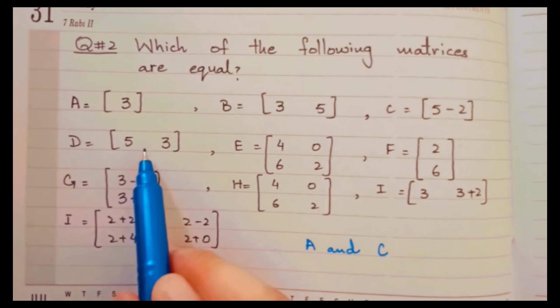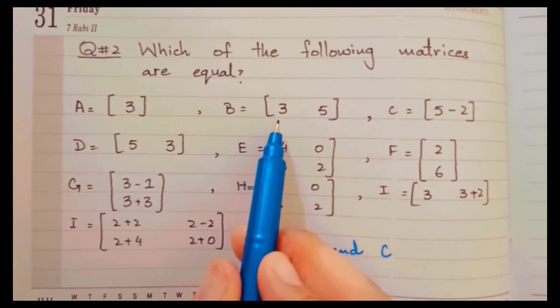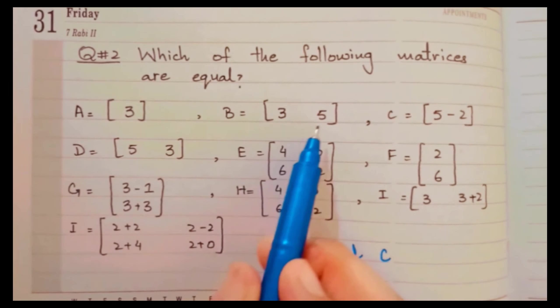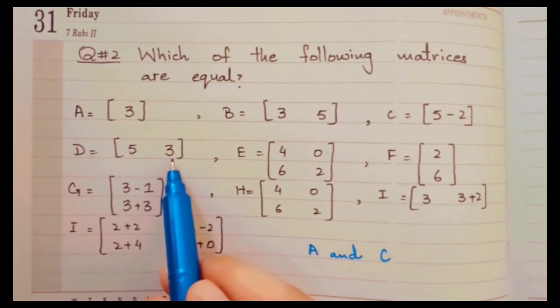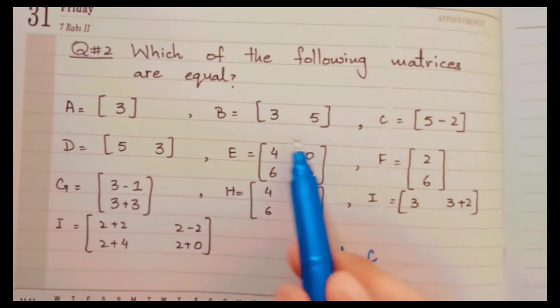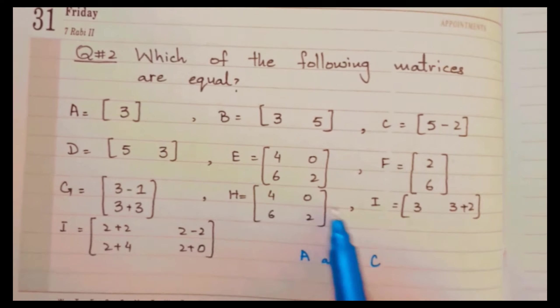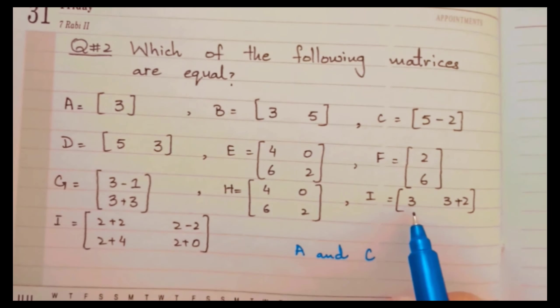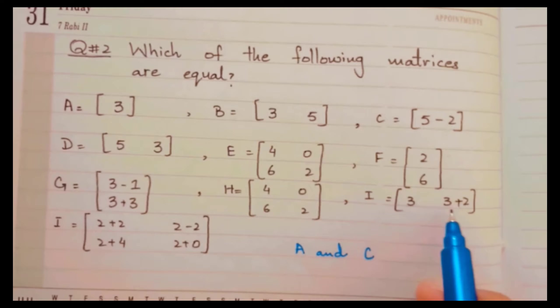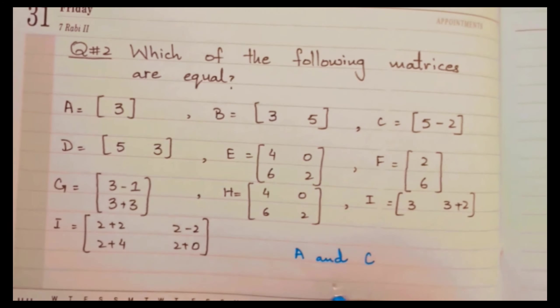Now by checking matrix B and D, we come to know that B and D, these both matrices seem that these two are equal, but the corresponding entries are not equal. In place of 3 there is 5, and in place of 5 there is 3. So there is one more matrix, that is I. If we add 3 plus 2, we get 5. So it means B and I matrices are equal.